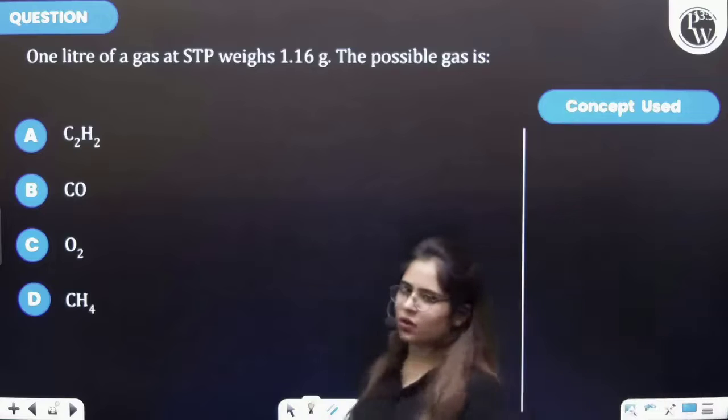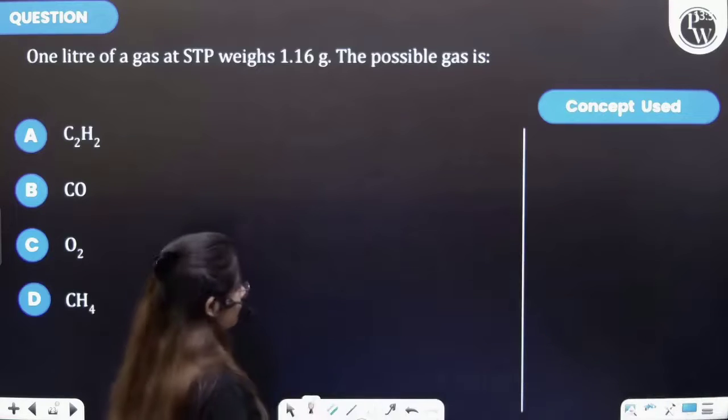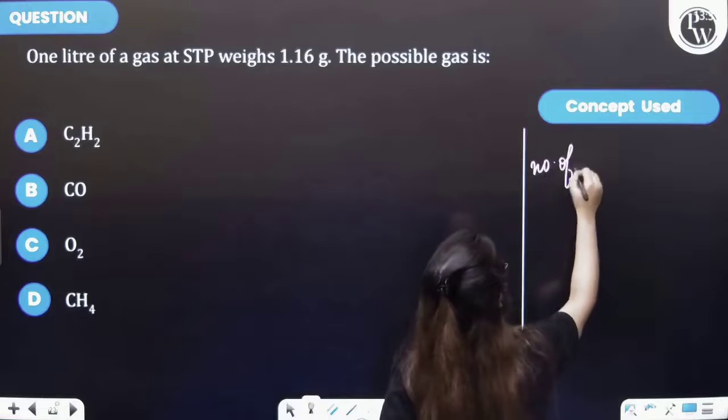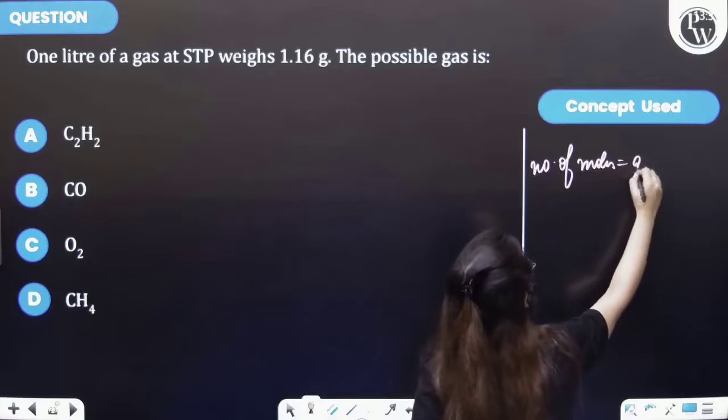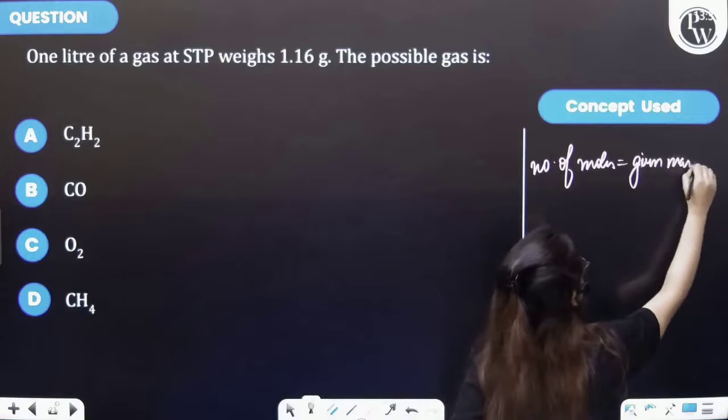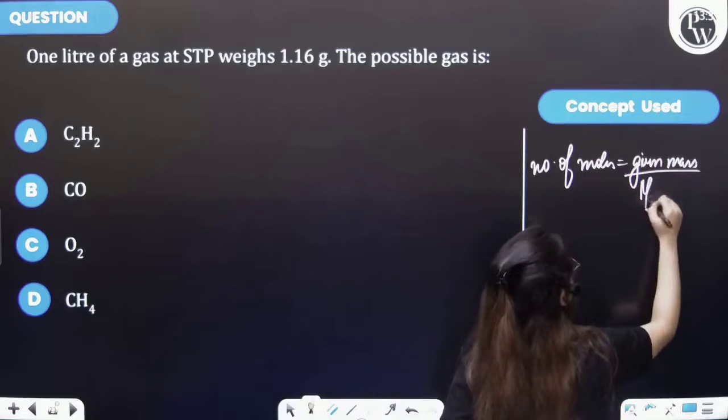Firstly, let's see the key concept of this question. Number of moles is equal to given mass upon molar mass.